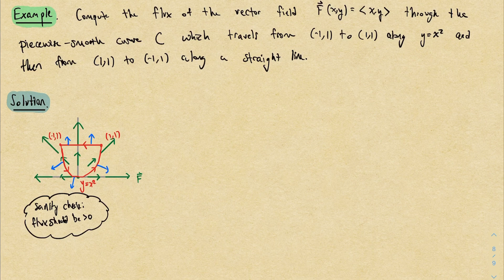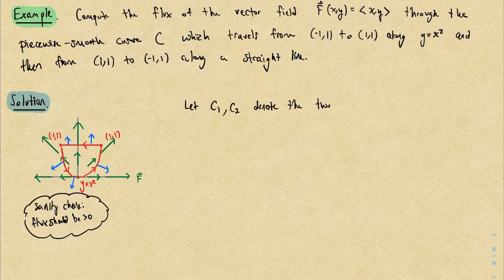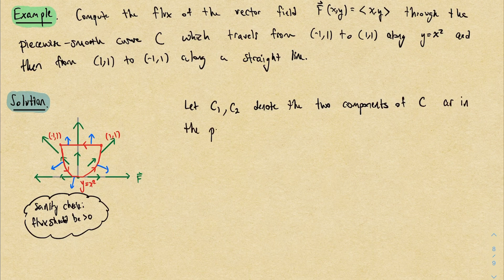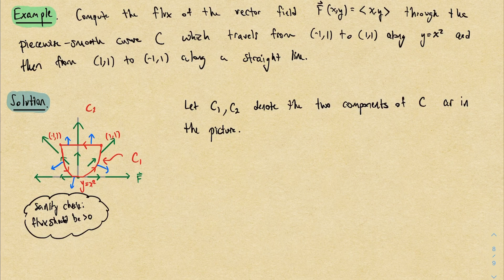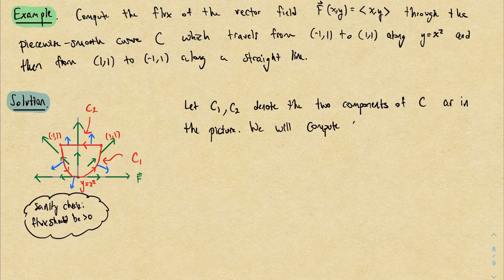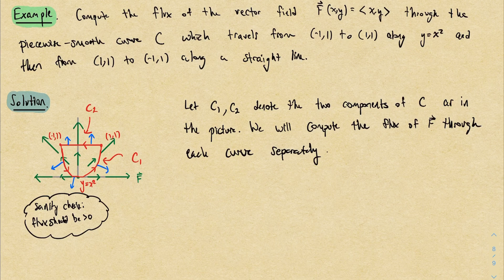Now to actually compute this, we're going to have to split the curve up into two pieces. There won't be a way to deal with the whole curve in one go. So I'll let C₁ and C₂ denote the two components of the curve, and I'll label them in the picture. C₁ is going to be the x² thing, and C₂ is going to be the straight line. And we'll compute the flux of the vector field through each curve separately. Integration over curves is additive, so once we do that, we can just add the numbers together and that will give us the flux through the entire curve.